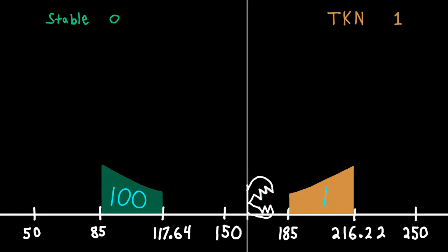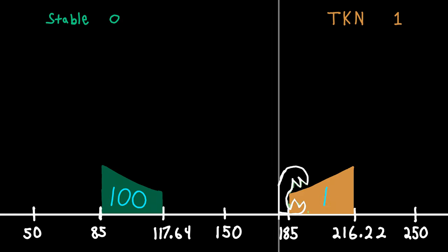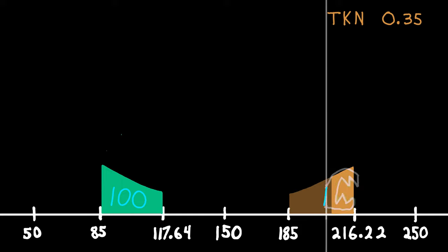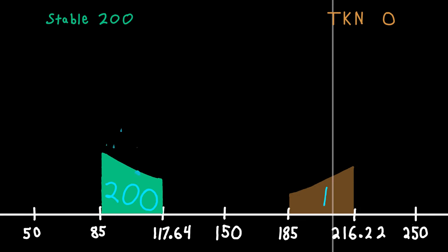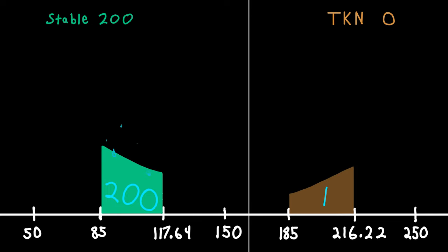When the entire sell range is empty, there will be 0 TKN in the sell range and 200 stable in the buy range. And now the price dumps. This time there is 200 stable in the buy range.